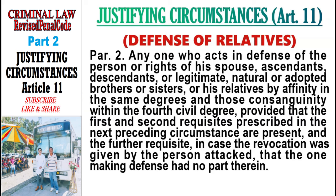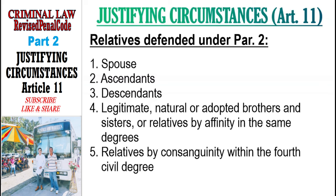Who are the relatives being defended under Paragraph 2? They are: Spouse, Ascendants, Descendants, Legitimate, Natural, or Adopted Brothers and Sisters, or Relatives by Affinity in the Same Degrees, and Relatives by Consanguinity within the Fourth Civil Degree.